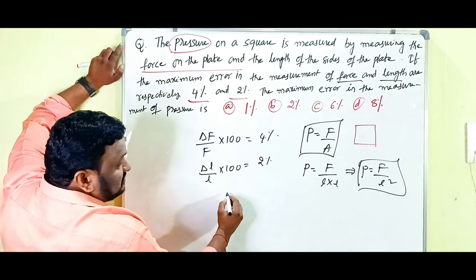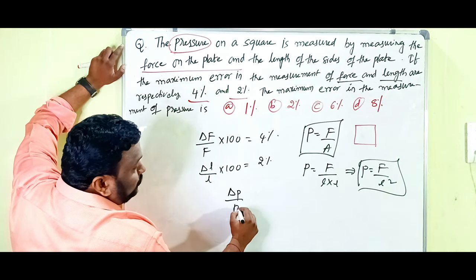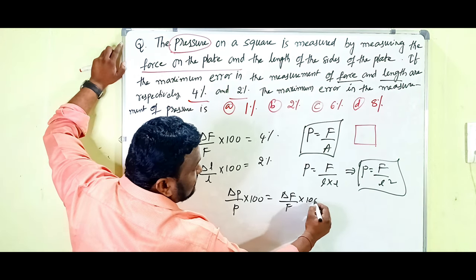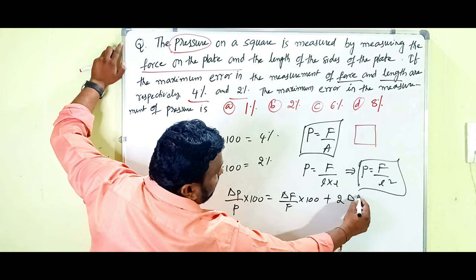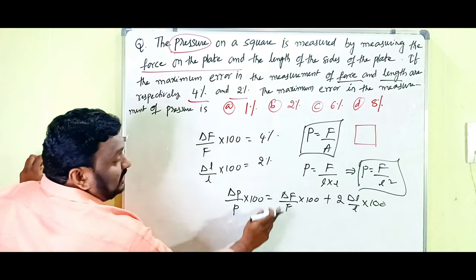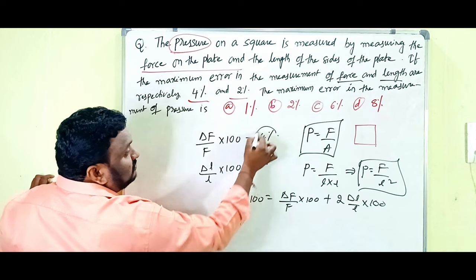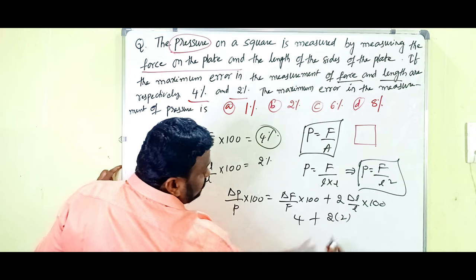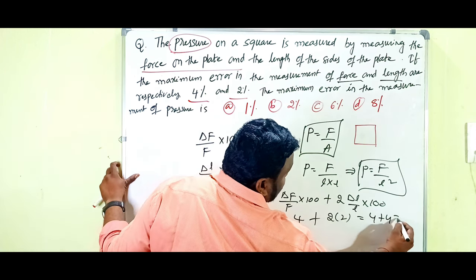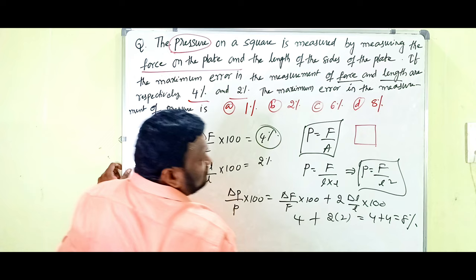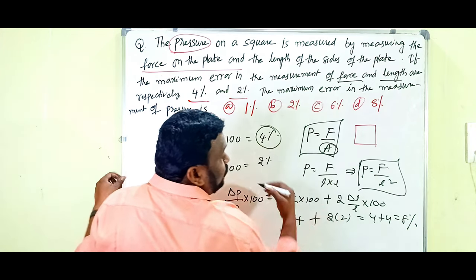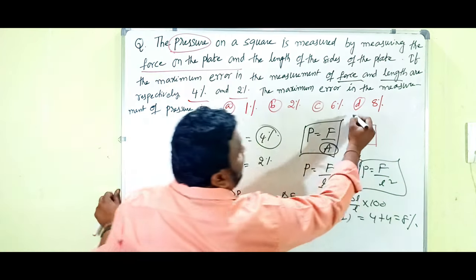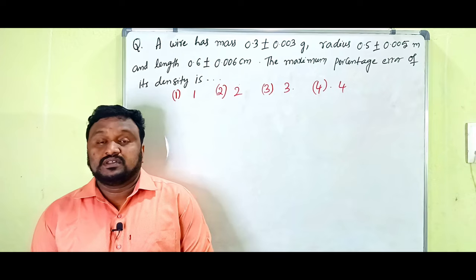Substituting the given values: ΔF/F × 100 = 4%, and 2 × ΔL/L × 100 = 2 × 2% = 4%. Therefore, total error = 4 + 4 = 8%. So the answer is 8%.